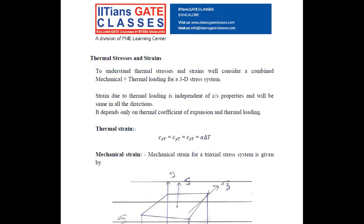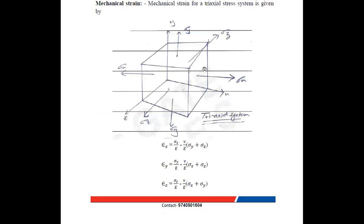Thermal strain in x, y, and z directions are all equal to alpha·ΔT. For mechanical strain due to applied mechanical loading, we consider a tri-axial stress system with normal stresses sigma x, sigma y, and sigma z. The mechanical strain in the x direction can be written using the stress-strain relationship: epsilon x = sigma x / E − (nu / E)(sigma y + sigma z).